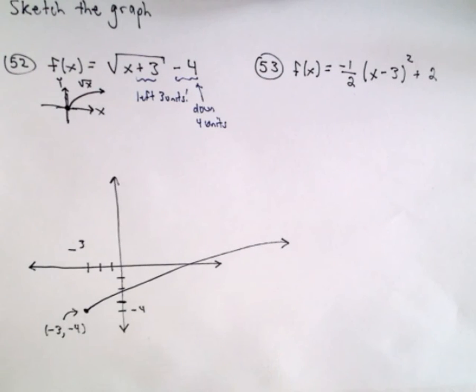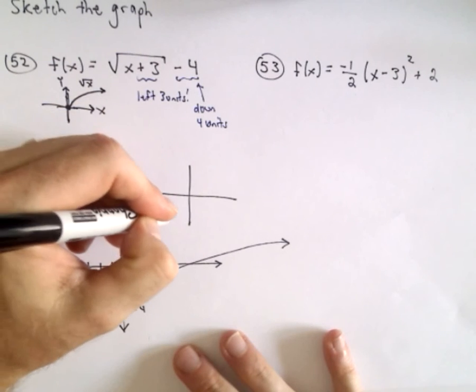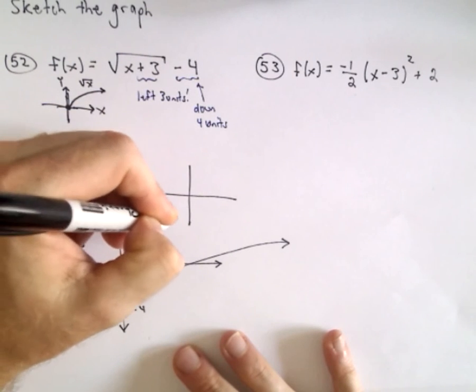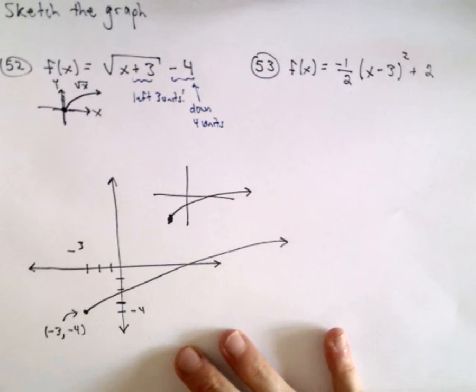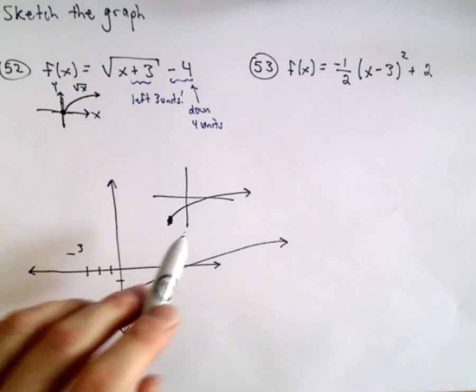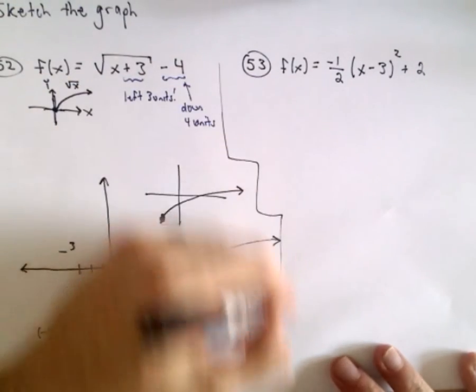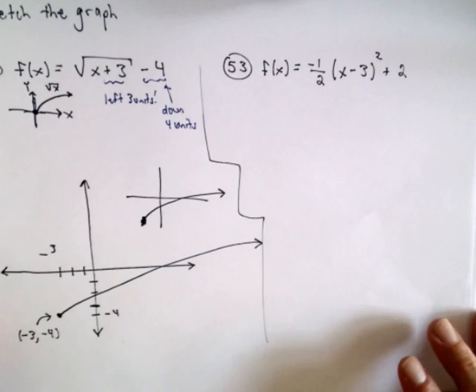So it's still going to have that bendy shape, not the best graph in the world, a rough graph would just look something like that. So again, it still has the same shape as that square root function. It's basically just been shifted three units to the left and four units down. So again, plot some points if you want a prettier graph.